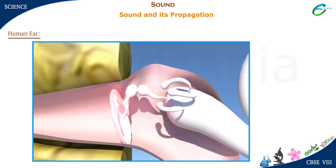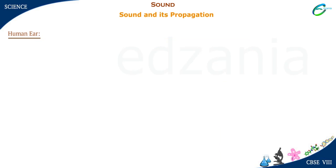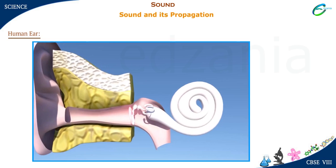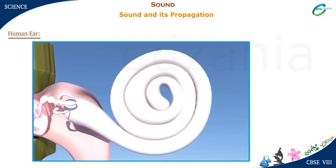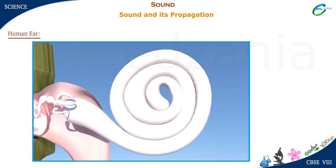These mechanical vibrations of the eardrum, in turn, vibrate the hair-like nerve cells present in the inner ear region. Nerve cell vibrations produce electrical signals, which are then propagated to the brain to generate the sensation of hearing.